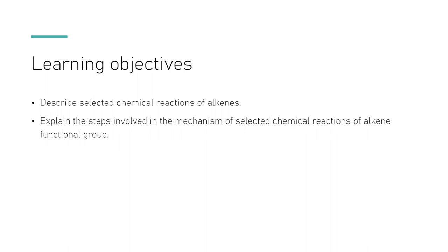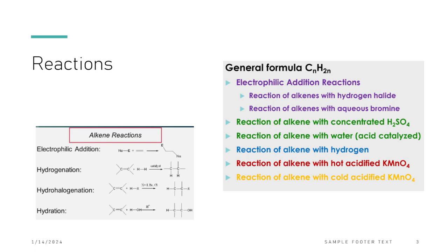We're going to look at the reactions and the mechanisms for those reactions. The reactions we're covering include: electrophilic addition reactions such as reactions with hydrogen halides and aqueous bromine; the reaction with concentrated sulfuric acid and water under an acid catalyst; hydrogenation of alkenes; and the oxidation of alkenes using hot acidified and cooled acidified potassium permanganate.